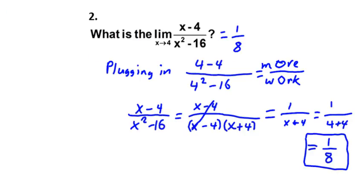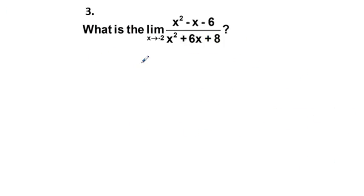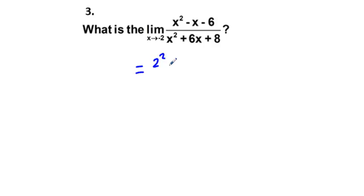Problem three: the limit as x approaches negative 2 of (x squared minus x minus 6) over (x squared plus 6x plus 8). Again, the first step is plugging in. In the numerator we have 2 squared minus 2 minus 6, substituting x equals negative 2.